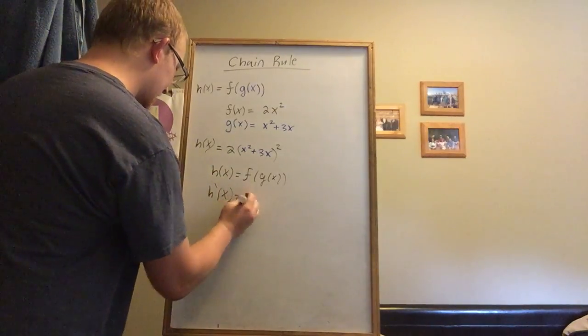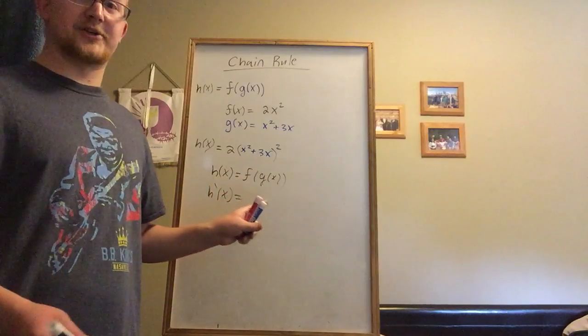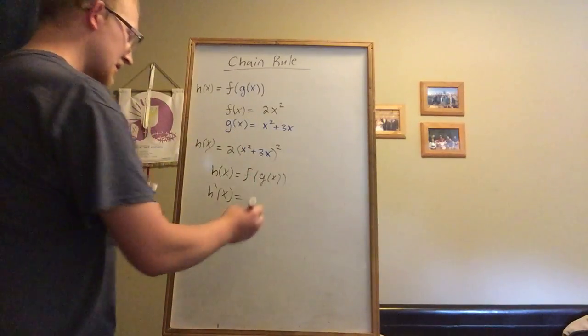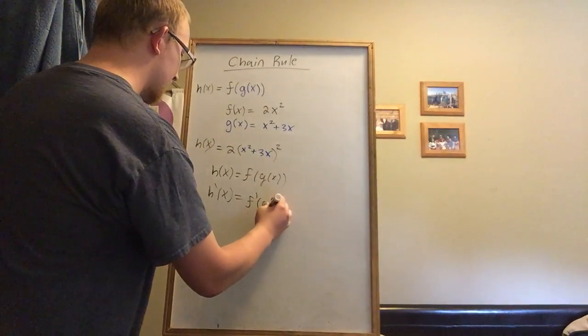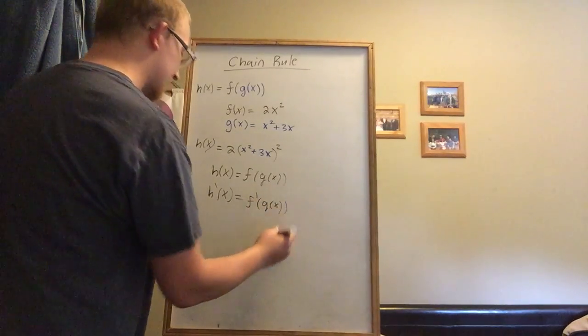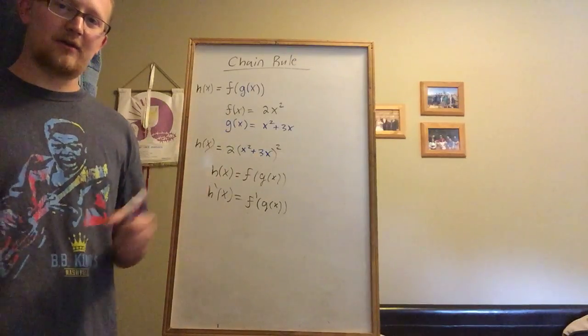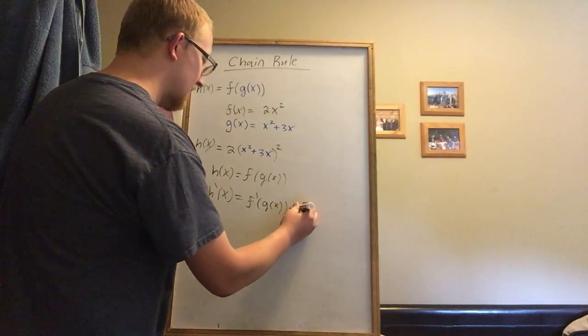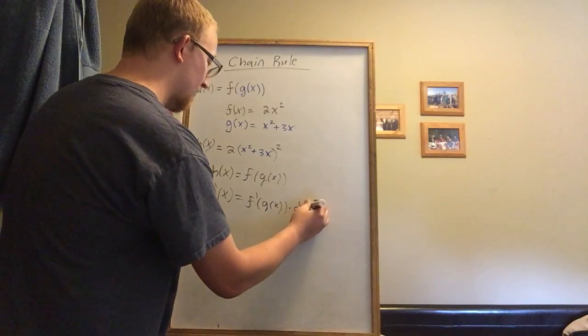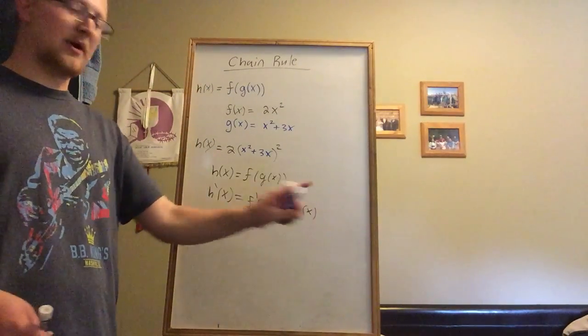The first step is to take the derivative of the outer function without changing the inner function. That looks like f'(g(x)). There's one more step - we have to take care of the inner function. To do that, you multiply this whole thing by the derivative of g with respect to x, or g'(x).